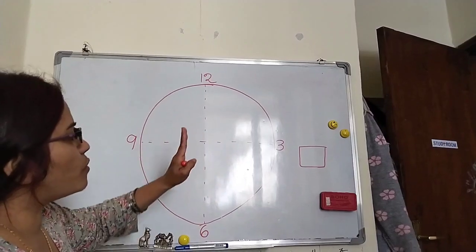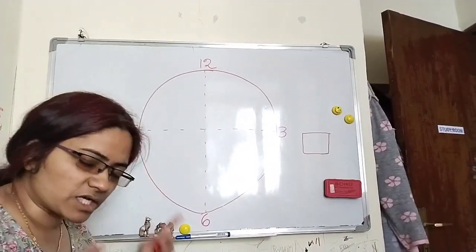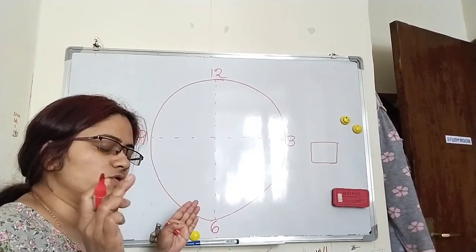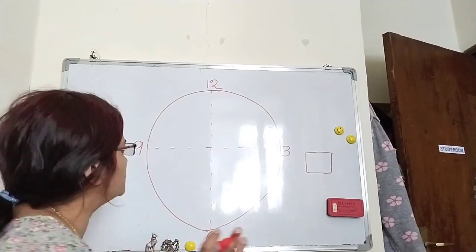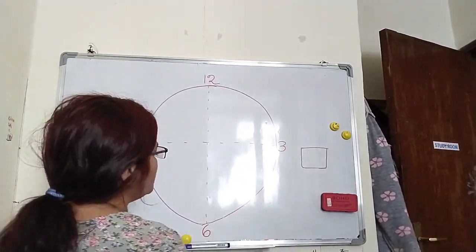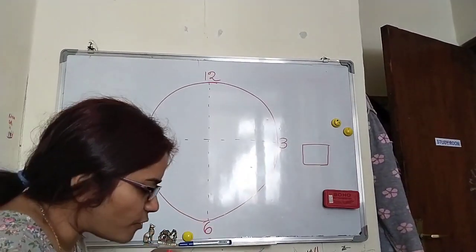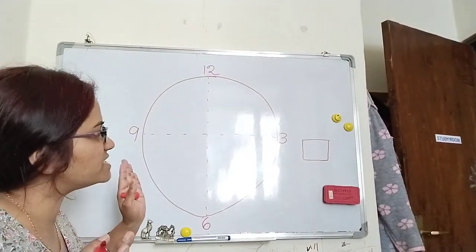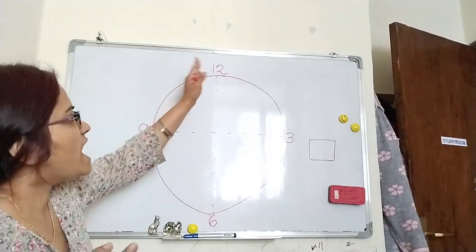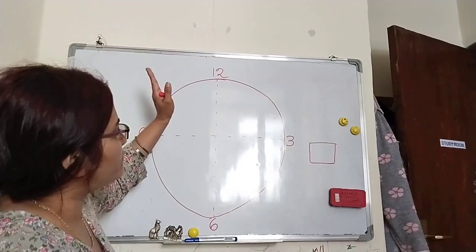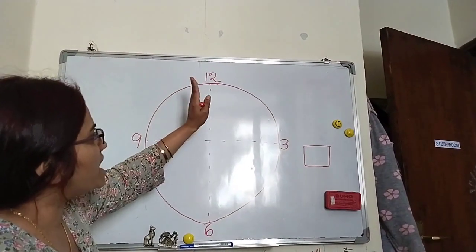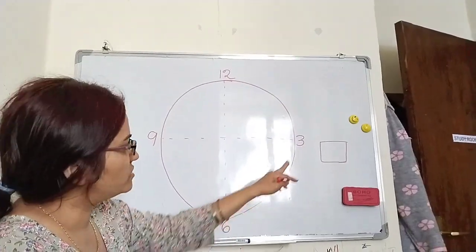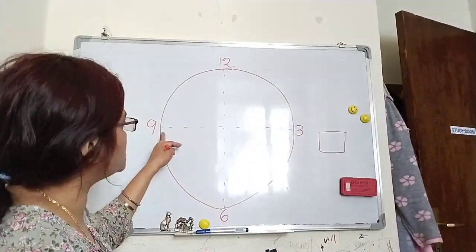First, look at what is in the clock. In the clock, numbers 1 to 12 are in there. For drawing purposes, what I do is make one circle, and after that I make 12, then the opposite — 6, then 3, and the opposite is 9.